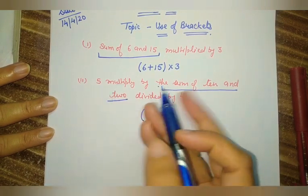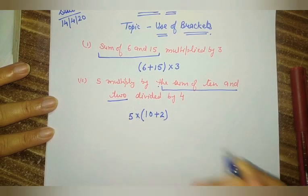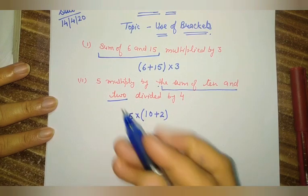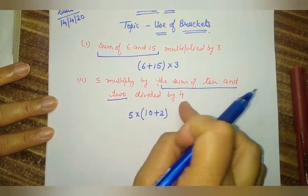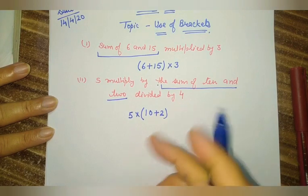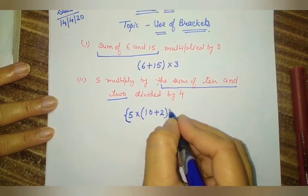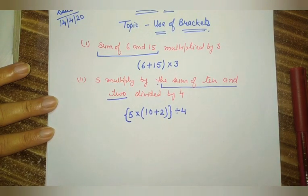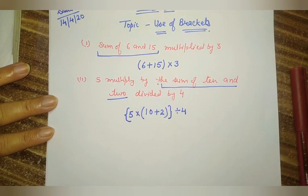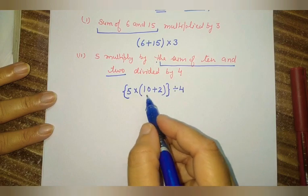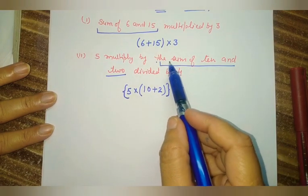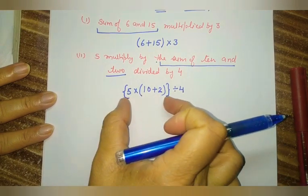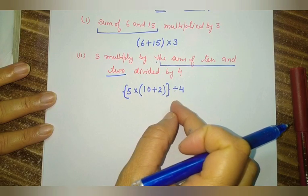Then after, it is multiplied by 5. That means 5 multiplied by the sum of 10 and 2. And the whole equation — this full — is divided by 4. To show this whole, we use another bracket, then we write divide by 4. So in this numerical expression I use two brackets to make them separate: first a small bracket to show the sum of 10 and 2, then a second bracket to make this separate, because the whole is divided by 4.